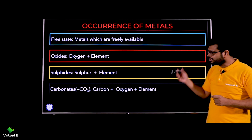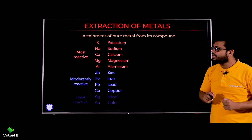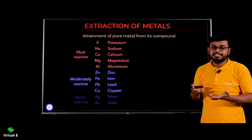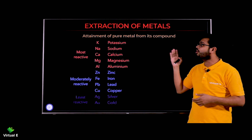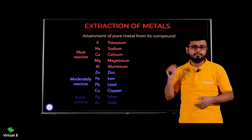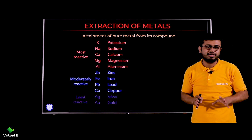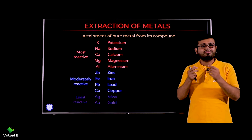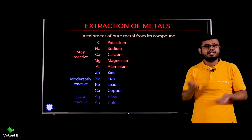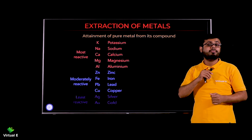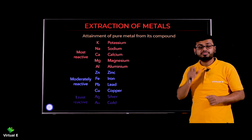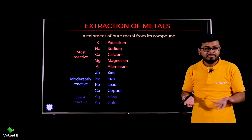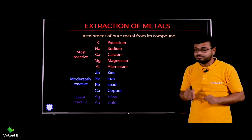Next is extraction of metals. This means attainment of pure metal from its compound — whatever compound you have, you need to extract the metal from it in pure form. For example, if you have copper oxide (CuO), you need to extract copper from it. That is called extraction of the metal.